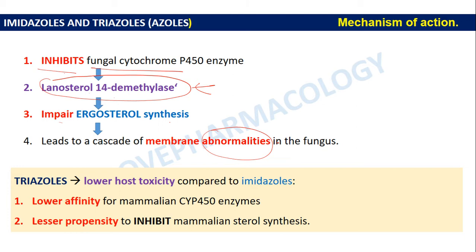When compared with triazoles, imidazoles have slightly higher toxicity. Triazoles have lower host toxicity compared to imidazoles because of their lower affinity for mammalian cytochrome P450 enzyme and lesser propensity to inhibit mammalian sterol synthesis.